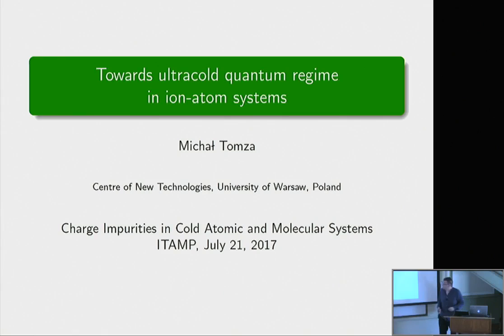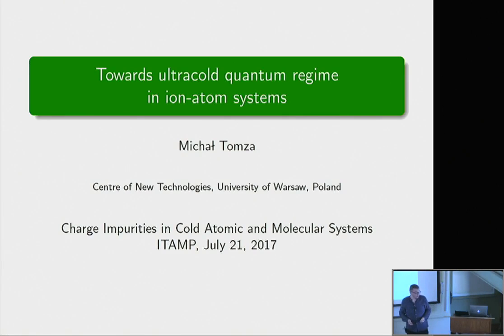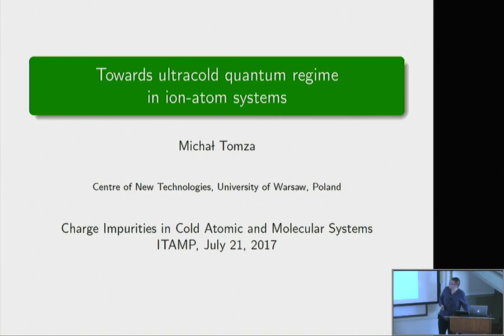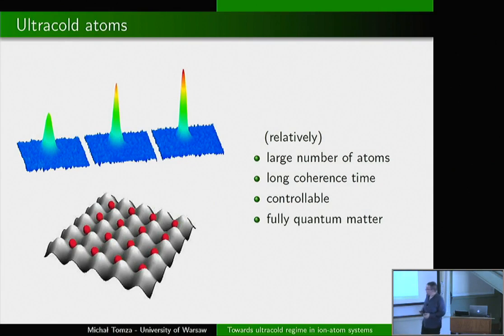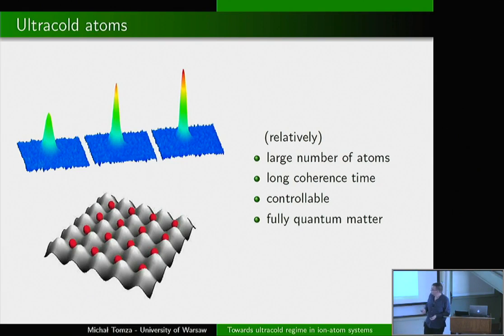This talk presents combined theoretical and experimental efforts toward reaching the ultra-cold quantum regime in ion-atom systems. During the last two days, many efforts have been described, but we are still in a relatively warm collision regime. We want to discuss two possible ways to reach the few or even single partial wave regime. Ultra-cold atoms are great systems: large numbers of atoms, long coherence times, fully controllable, and fully quantum matter.